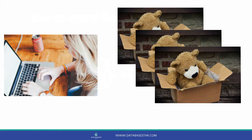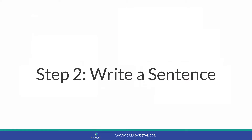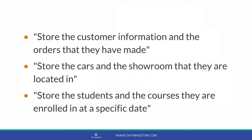How do we implement that for our database? We move on to step two. Step two is where we write down what we're trying to design in a sentence. Writing it down helps us determine if a relationship between the two tables is a one-to-many relationship. Other types of relationships are one-to-one and many-to-many, which I'll cover in separate videos. For now, write down what you want to store in a sentence. Some examples are: store the customer information and the orders that they've made; store the cars and the showroom that they are located in; store the students and the courses that they are enrolled in at a specific date. Try to keep it limited to just your two tables for now.